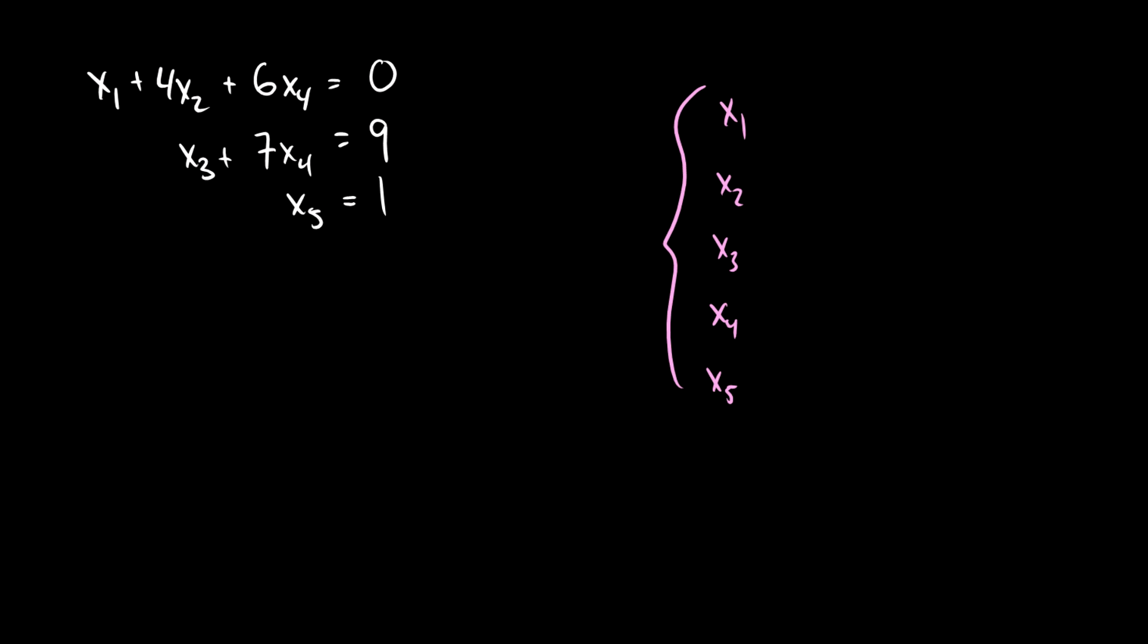Okay, so let's take a look at some variables here. We have x4 showing up twice, we have an x2 here, and we have x1, x3, and x5. So x4 is going to be free.